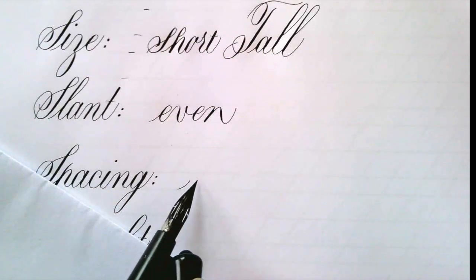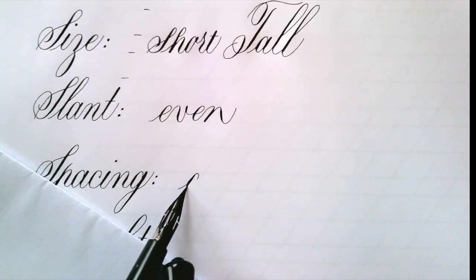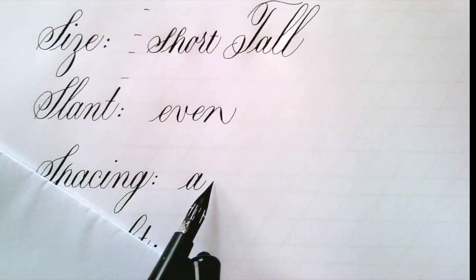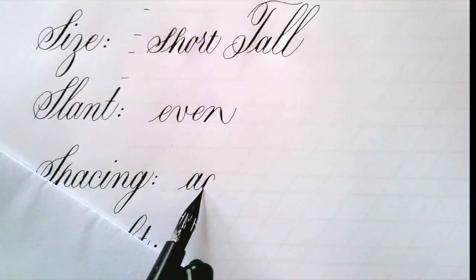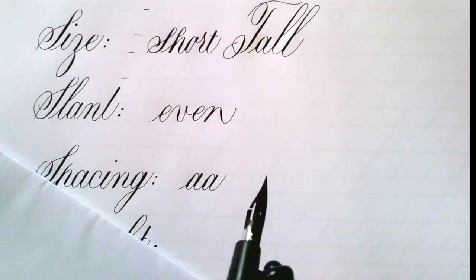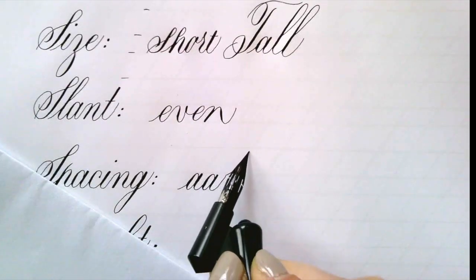Spacing is one of those things that can ruin a piece. If you don't have equal width and equal distance inside the letters and between the letters, it will look off. And a way to practice spacing is doing what we call a necklace.